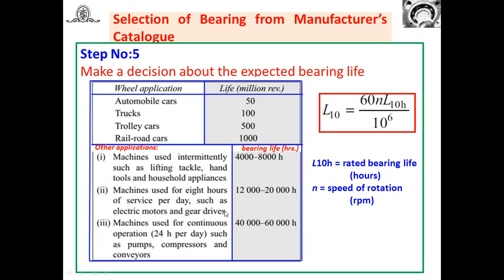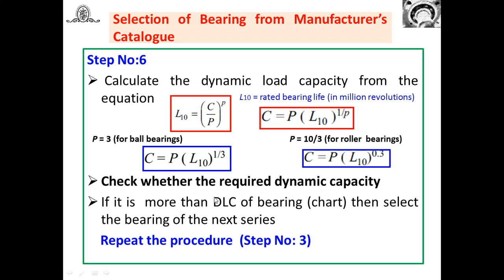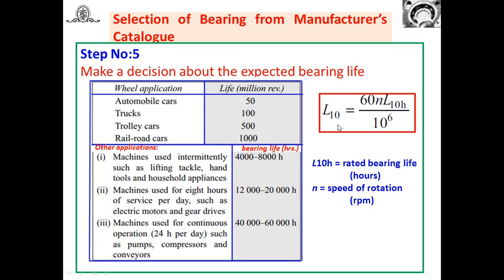Make a decision about the expected life for the particular application, then convert it to L10 in million revolutions if needed using: L10 = (60·N·L10H) / 10^6, where N is the speed of rotation and L10H is the life in hours. L10 life means 90% of the bearings will survive that life — in other words, 10% of bearings may fail. So decide on the expected life and express it as L10 in million revolutions.